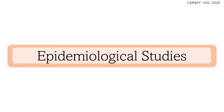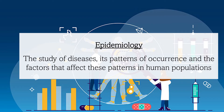Let's first look at types of epidemiological studies. Epidemiology is the term given to the study of diseases, its patterns of occurrence, and the factors that affect these patterns in human populations. This study is carried out by an epidemiologist. Epidemiologists gather data on the number of people with the disease — morbidity — and the number of people that have died due to the disease — mortality — within a population. Epidemiology can be used, but is not limited to, the study of both infectious and non-infectious diseases. It can also be used to study health-related events such as work-related accidents and car accidents.